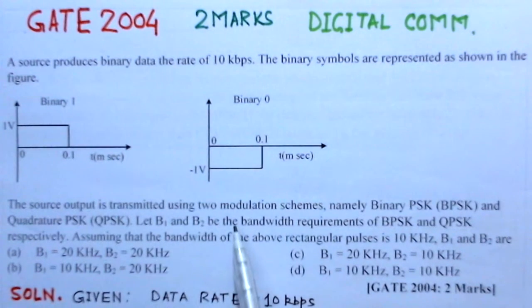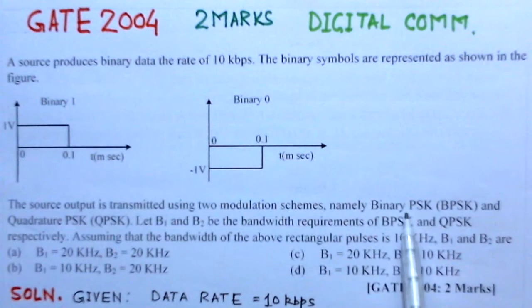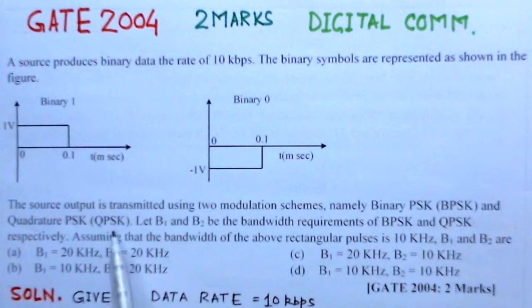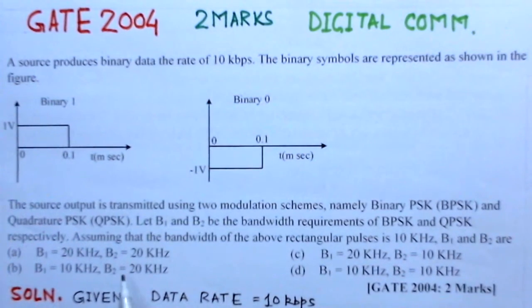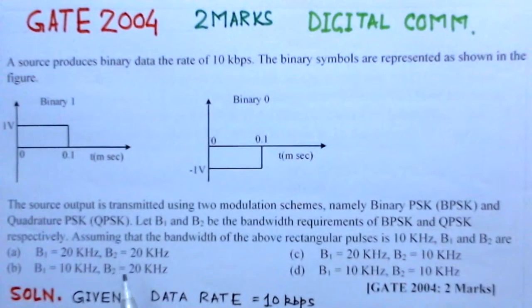Now, the source output is transmitted using two modulation schemes, namely Binary PSK (BPSK) and Quadrature PSK (QPSK). Let B1 and B2 be the bandwidth requirements of BPSK and QPSK respectively. Assuming that the bandwidth of the above rectangular pulse is 10 kHz, B1 and B2 are - and these are the options given here. That means we have to find the bandwidth for BPSK and QPSK systems.